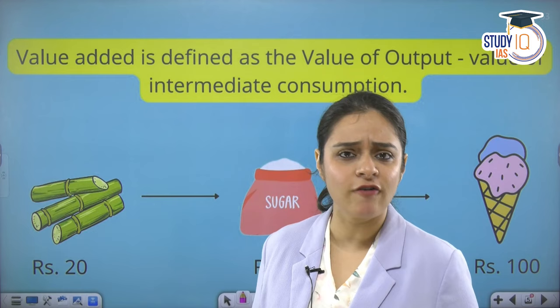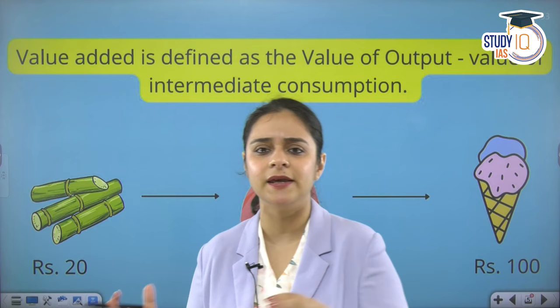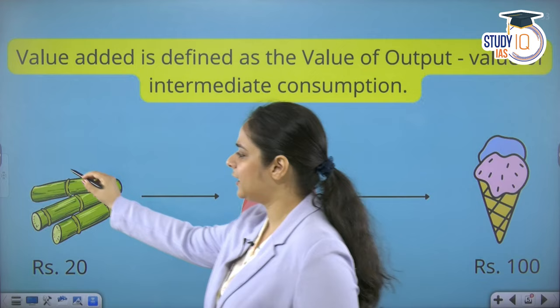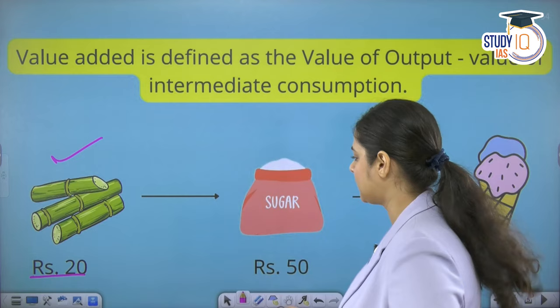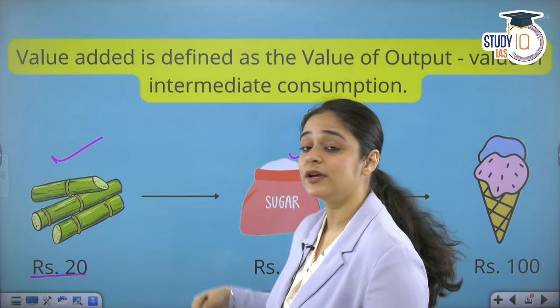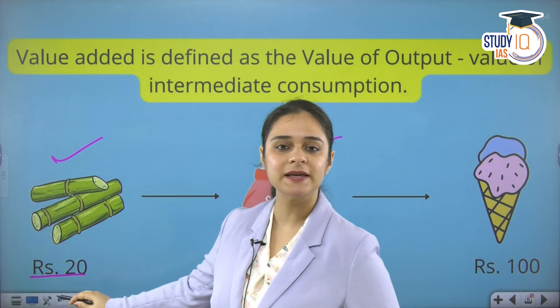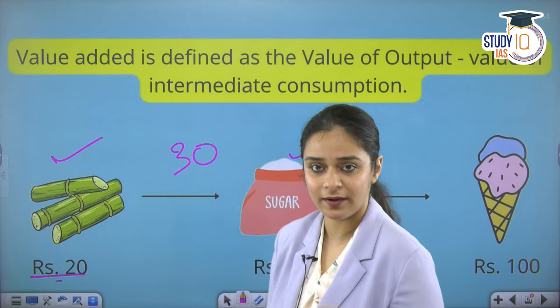So how do we calculate value added? The simple formula is: Value Added = Value of Output minus the value of intermediate consumption, that is, the raw materials used. For example, let's take sugarcane worth 20 rupees. We process it and make sugar. The sugar is worth 50 rupees. So the value added at this stage is 50 minus 20, which is 30 rupees.